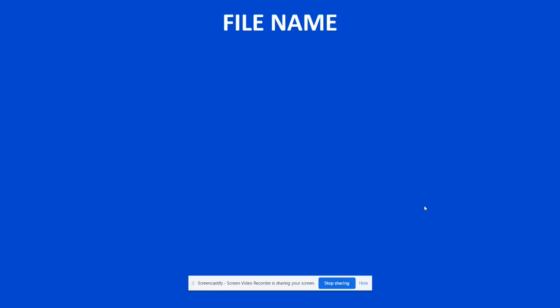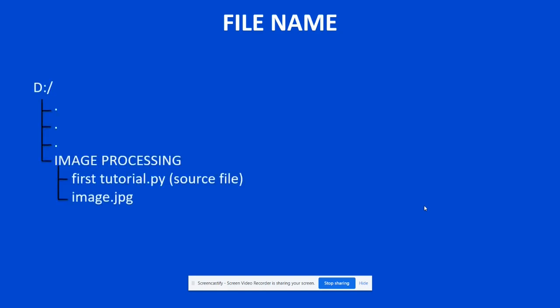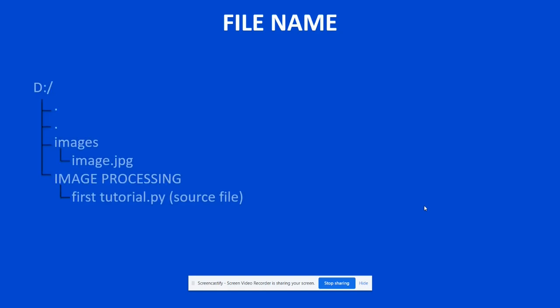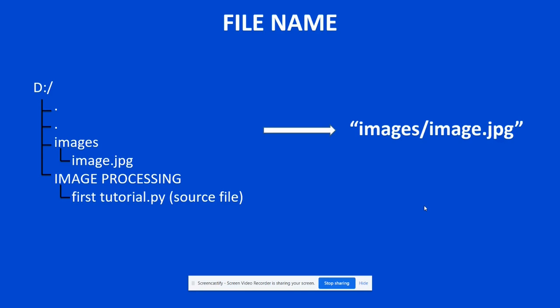For the file name argument, there are three cases. In the first case, the source code and image are in the same folder — just specify the image name in double quotes. In the second case, the source code and image are in different folders but the same directory. Specify the relative path, for example, 'images/image.jpg', from the common directory.